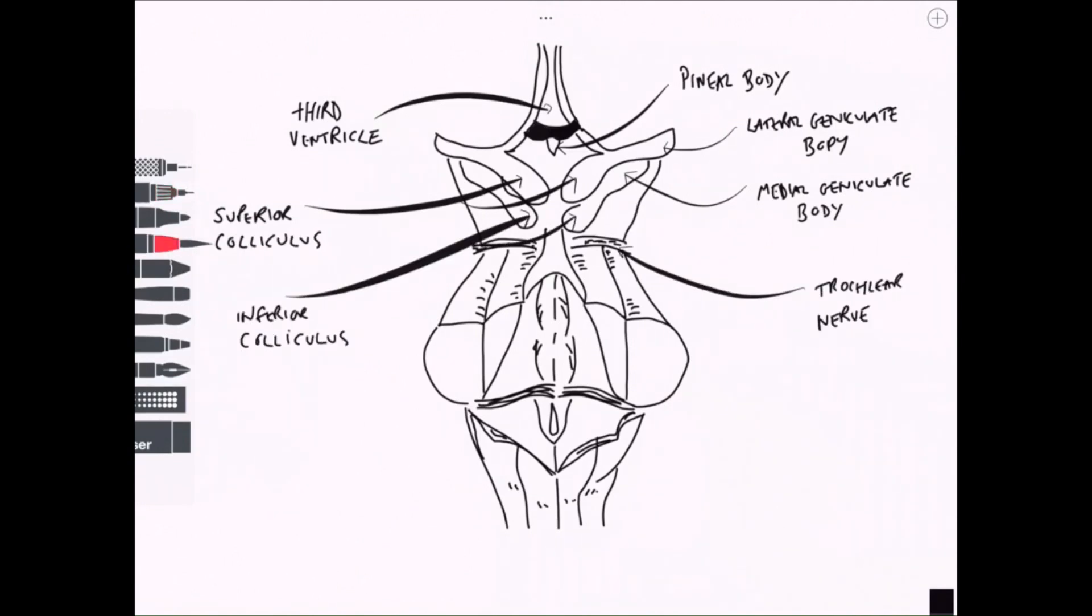I'll come back to those. We've got the trochlear nerve, of course, the only cranial nerve to appear from the posterior surface and of course the only cranial nerve to decussate as well.